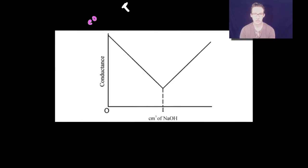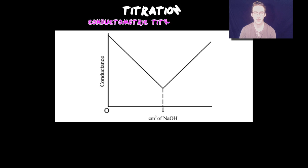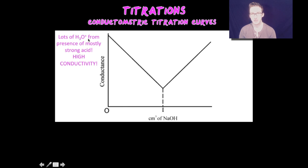Finally, we'll look at conductometric titration curves, where we measure the volume of titrant against conductivity rather than pH. In the example, we're titrating a strong acid with a strong base. Initially, we have high conductivity in the acid solution because of lots of hydronium ion.